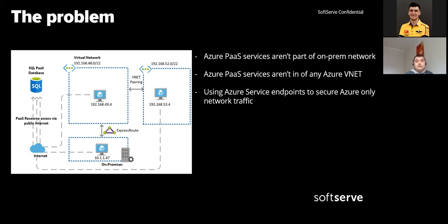There are different ways to achieve this. We can use service endpoints, for example, to communicate with Azure PaaS services. However, it has one significant disadvantage: it's not possible to use service endpoints from on-premises. There is another more powerful and universal way to do this — Azure Private Endpoints, which we will discuss today.